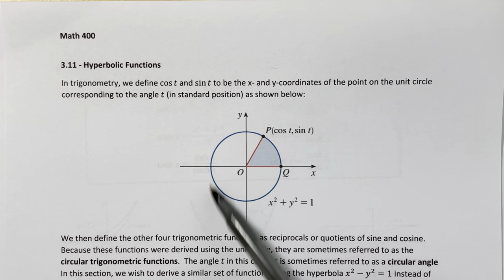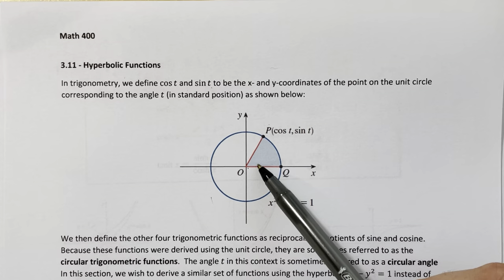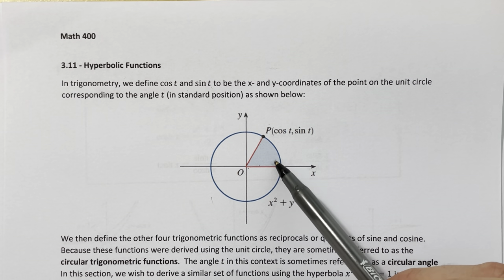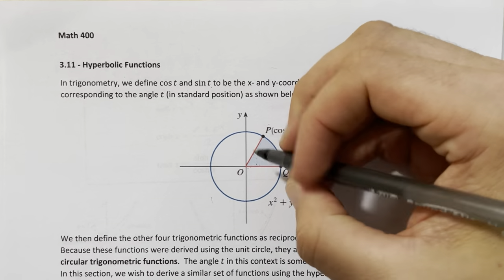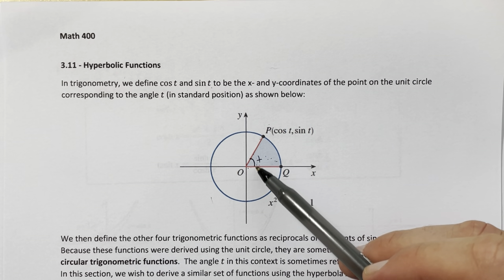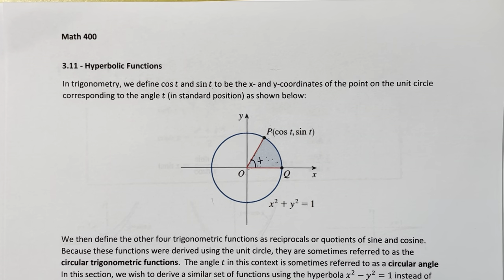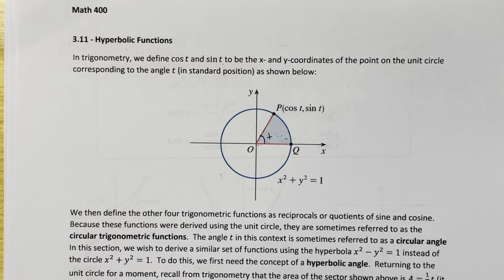If you have the unit circle centered at the origin, and you think of the value t as an angle in standard position — whose initial side is on the positive x-axis — then that angle determines a sector of the unit circle, shaded here in blue. It also determines a unique point P. We define cosine of t and sine of t to be the x and y coordinates of that point on the unit circle, which directly generalizes the right triangle definition.